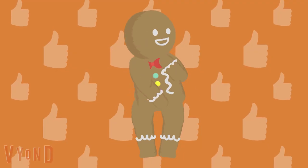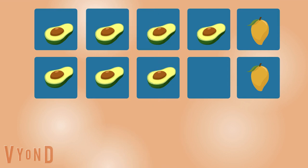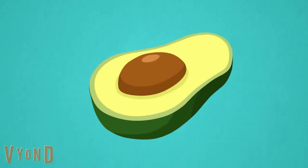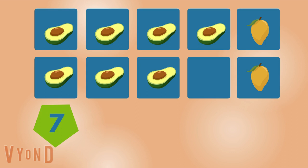Well done. How many fruits are there? Avocado. One, two, three, four, five, six, seven. Seven avocados.